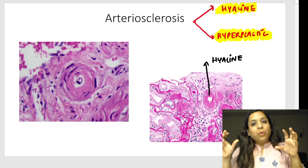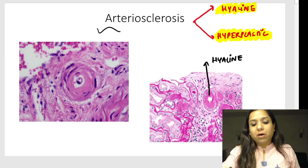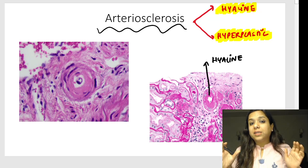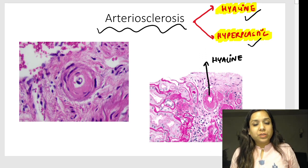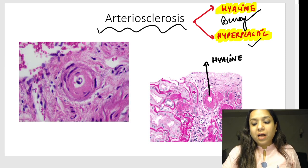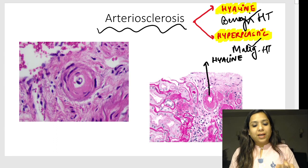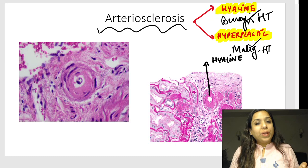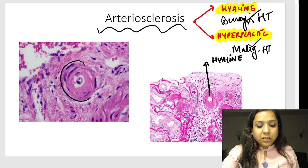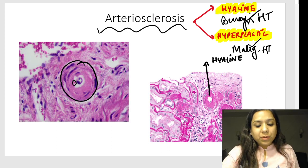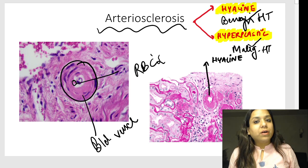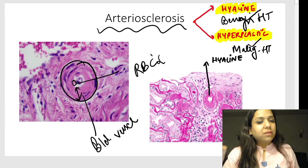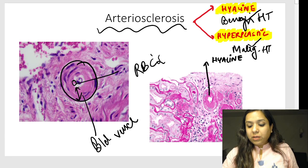A very important image usually asked is that of arteriosclerosis — thickening or hardening of arteries. It is of two kinds: hyaline arteriosclerosis, seen in benign hypertension, and hyperplastic arteriosclerosis, seen in malignant hypertension. Hyaline means pink homogeneous material. When you see a blood vessel, identify it by the lumen containing red blood cells. In this image, you can see a pink hyaline thickening of the vessel wall — that is hyaline arteriosclerosis.